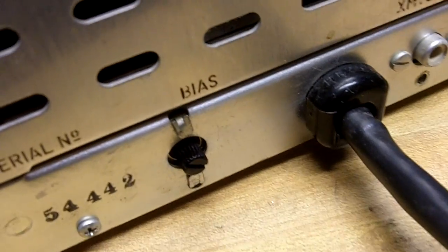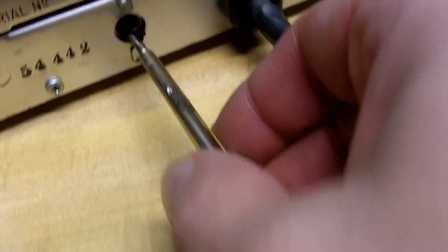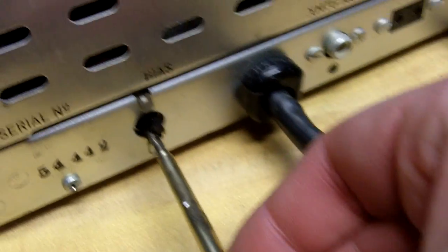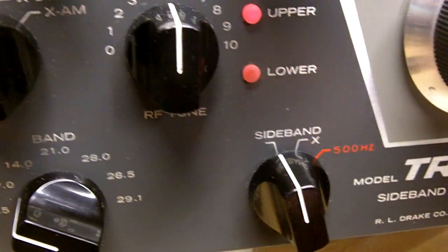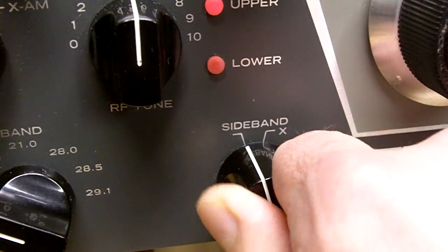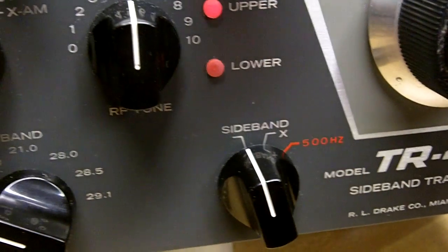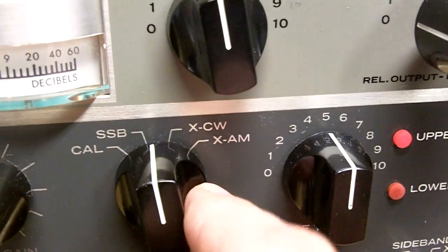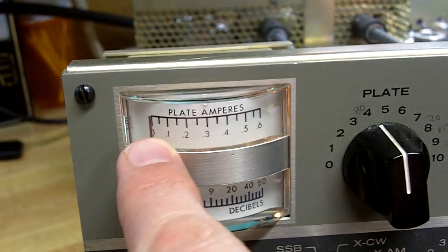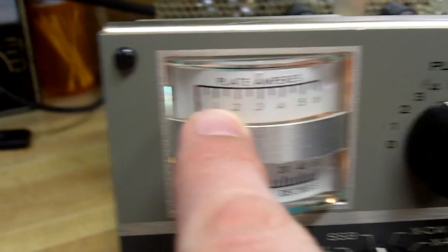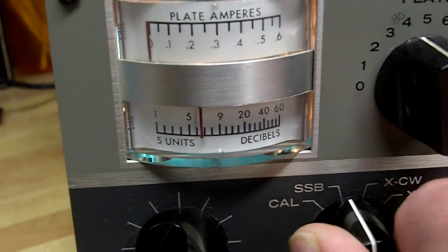So this is the bias control on the AC4 power supply, set it with a screwdriver. So I'm going to set that so according to the manual I should have my sideband switch counter clockwise position and turn my selector switch to the XCW position while watching the meter and set it at 0.1 amps there, plate amp meter.